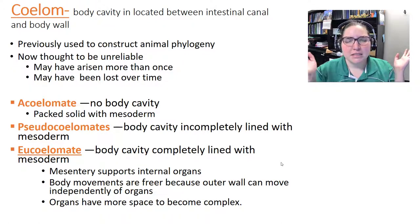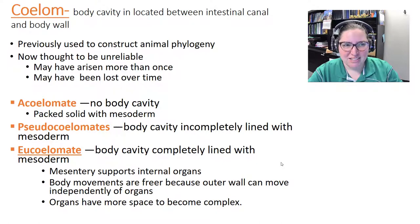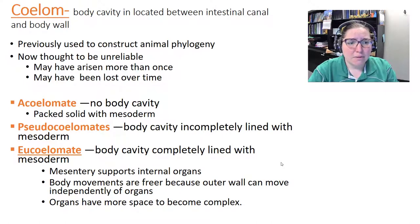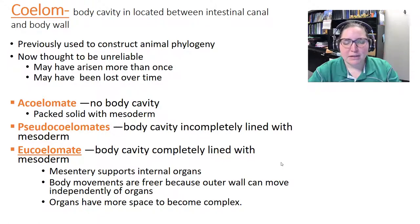The coelom used to be used to construct animal phylogeny, but it's now considered unreliable because it may have evolved more than once or been lost. An acoelomate has no body cavity and is packed solid with mesoderm. A pseudocoelomate has a body cavity but it's incompletely lined with mesoderm. A eucoelomate has a true coelom — a body cavity completely lined with mesoderm.